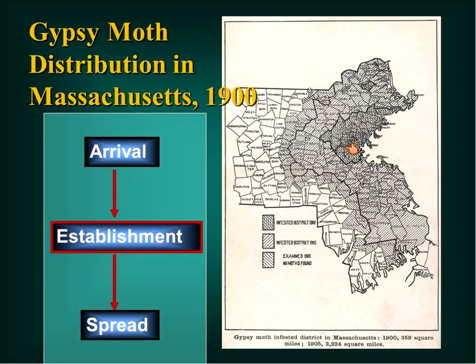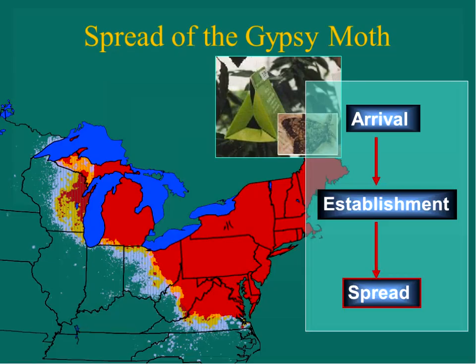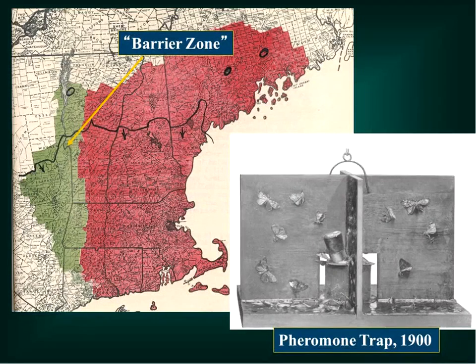The gypsy moth has essentially continued to expand its range, starting in Boston in the late 1800s and then gradually expanding throughout North America. One reason why gypsy moth spread has been relatively slow compared to a lot of other insects is that the females of the European strain Trouvelot brought are flightless, so they have very limited ability to move on their own.